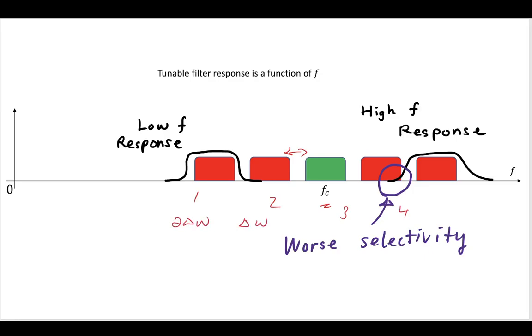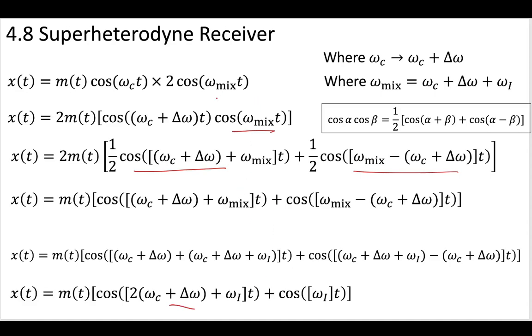So no matter what delta omega we use, when we put it together, when we force it together with this mixed wave, we're going to end up with a modulated wave that has two components. So one at some higher frequency and one at our intermediate frequency.